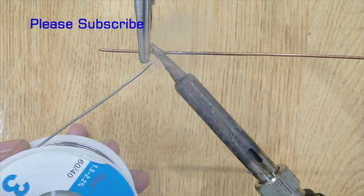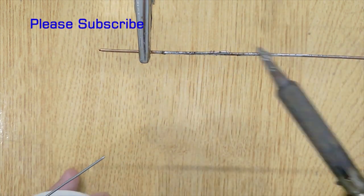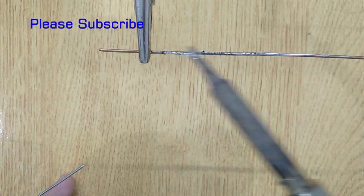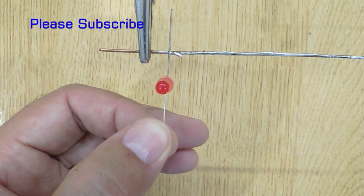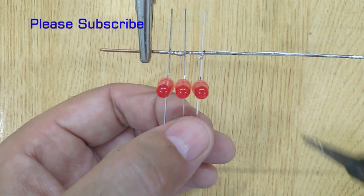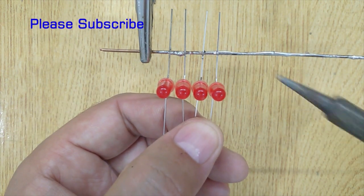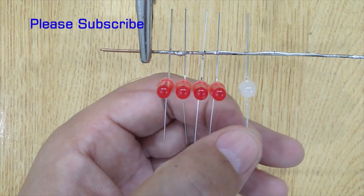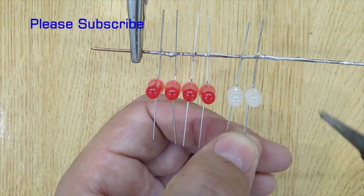Now apply some solder on both copper wires. After that, solder the positive pins of red LEDs on the first copper wire. And in this way, solder the negative pins of blue LEDs on the first copper wire.